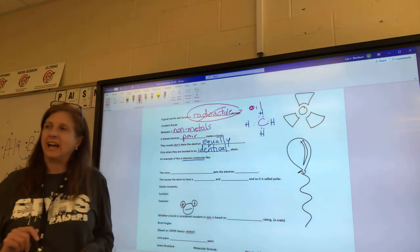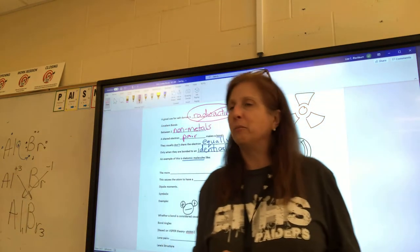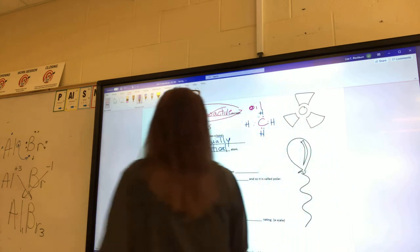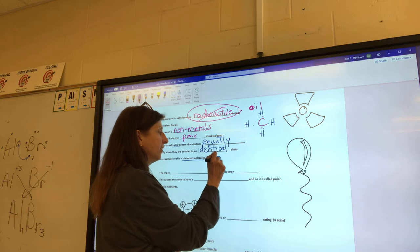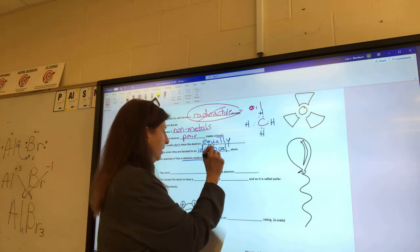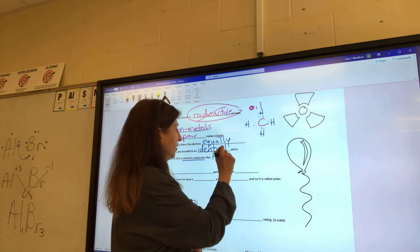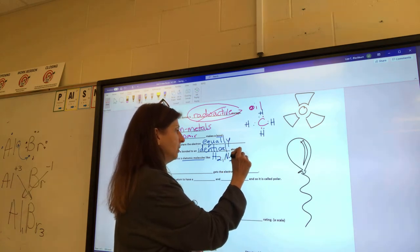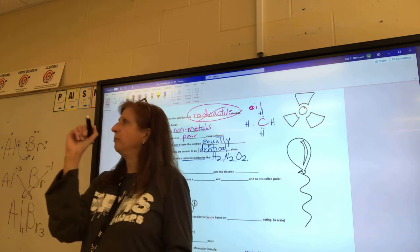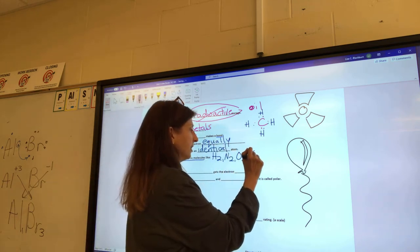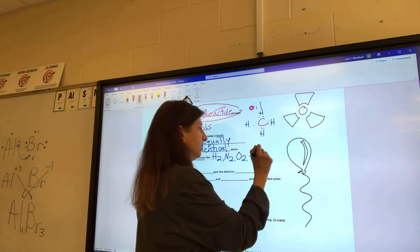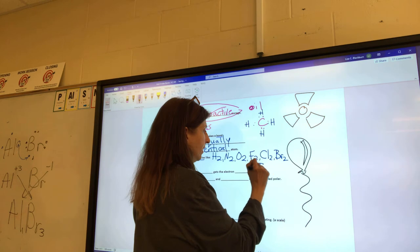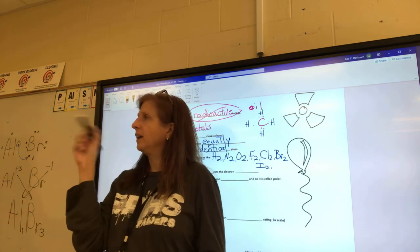Examples of diatomic molecules — eventually you'll need to memorize these: H₂, N₂, O₂, F₂, Cl₂, Br₂, and I₂. They're bonded to themselves.